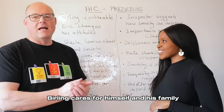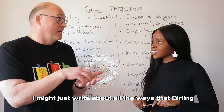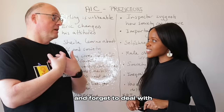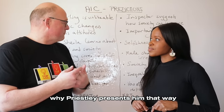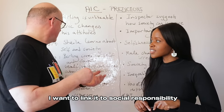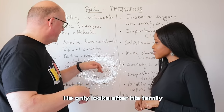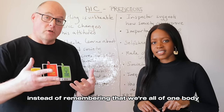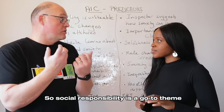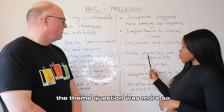In 2020 the character question was about Birling caring for himself and his family. This is a dangerous question because you might just write about all the ways Birling looks after himself and his family, and forget to address why Priestley presents him that way. You want to link it to social responsibility: he only looks after himself instead of looking after wider society; he only looks after his family instead of remembering that we're all one body and have to look after each other.